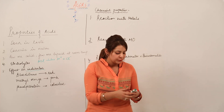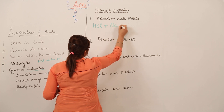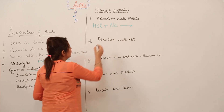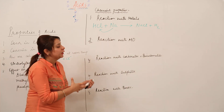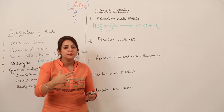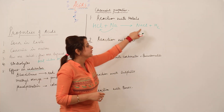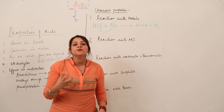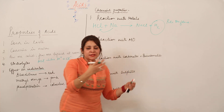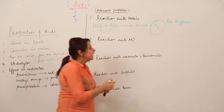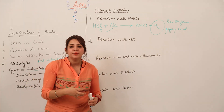For the reaction of acid with metal, suppose I have HCl and I add a metal M. It will form the respective salt and hydrogen gas is evolved. This reaction is shown by those metals which are more reactive than hydrogen. The hydrogen gas burns with a pale blue flame, and when hydrogen mixes with air, it produces a popping sound.